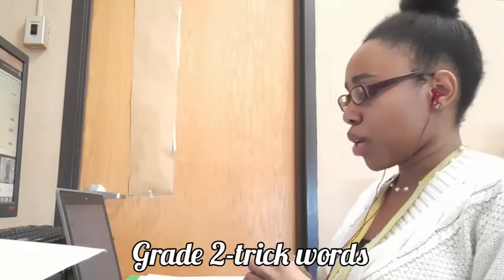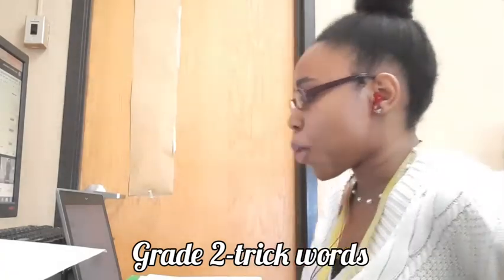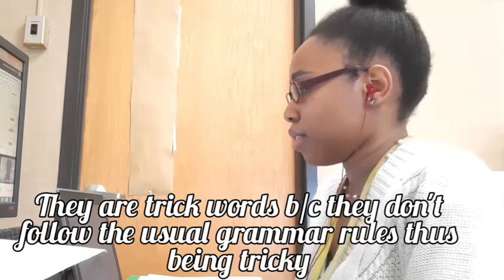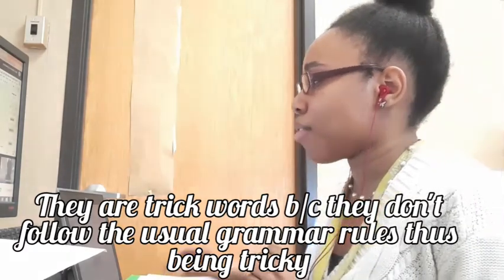We're going to start our trick words. Why don't you help us go over the word have. Good. Now what are we going to do next? We're going to spell the word have. So everybody, unmute so we can spell the word have together. H, A, V, E. Good. Now what are we going to do? What do we do after we spell it? We air write it. So now we're going to air write it. H, A, V, E. Good.